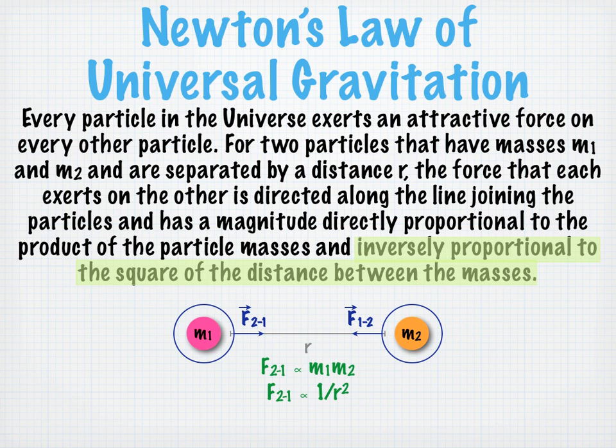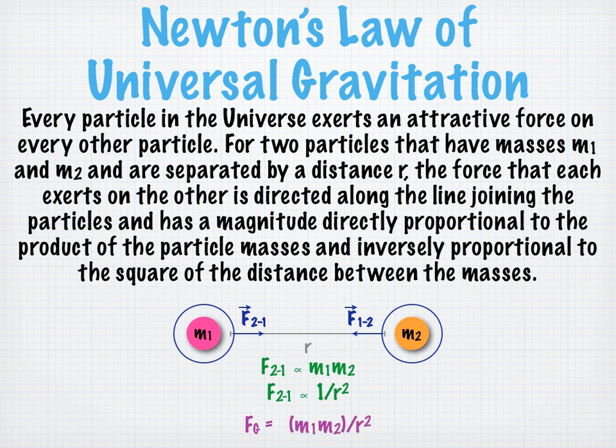The gravitational force, which we will call f sub g, is equal to m1 times m2 divided by r squared, all multiplied by a constant capital G, which is the universal gravitational constant. G has a value of 6.674 times 10 to the minus 11th newtons times square meters per square kilogram.